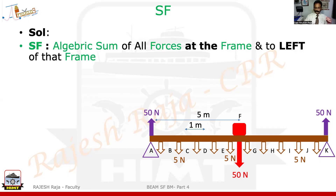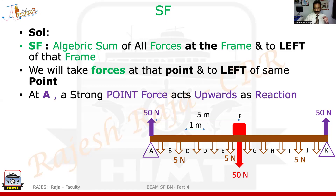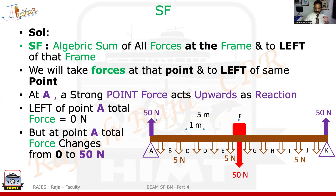Let us start off the Shear Force. Anywhere I have a point load, I will have two values because it is suddenly jumping from one value to a different value. So left of Alpha, the force is 0. But exactly at Alpha, it jumps to 50, which means Alpha should always be written with two values: 0 to 50. This is how you write it.